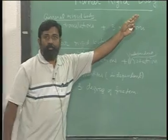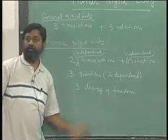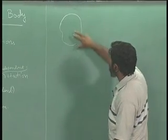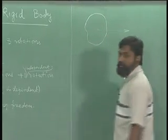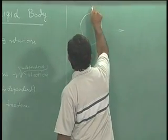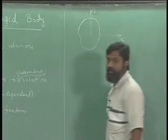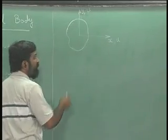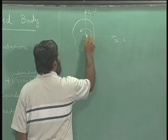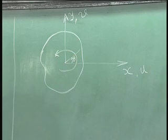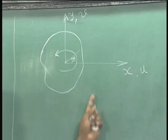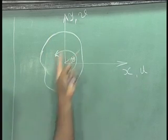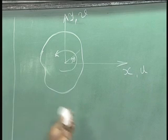For a planar rigid body, there are three degrees of freedom possible. If I draw a body here, there is motion possible in horizontal and vertical directions as two independent quantities — let me call them x and y. The displacement in the x direction I'll call u, displacement in the y direction I'll call v, and there is a rotation theta. There are three degrees of freedom: translation u, translation v, and rotation theta. Given these three values, I can tell you the position of this particular body.